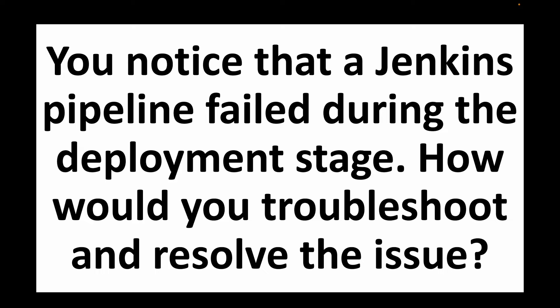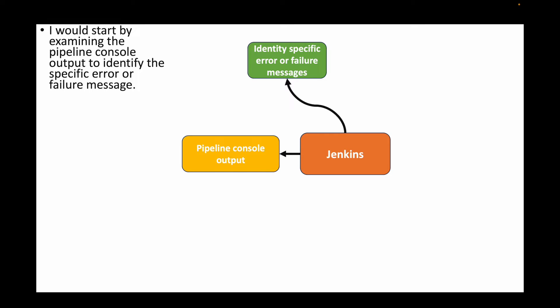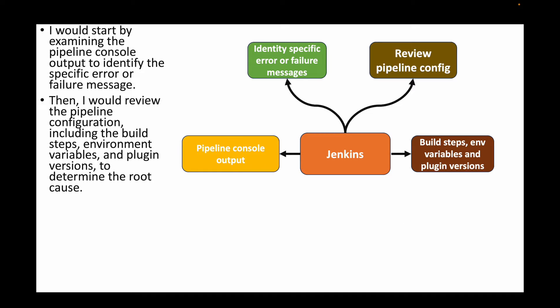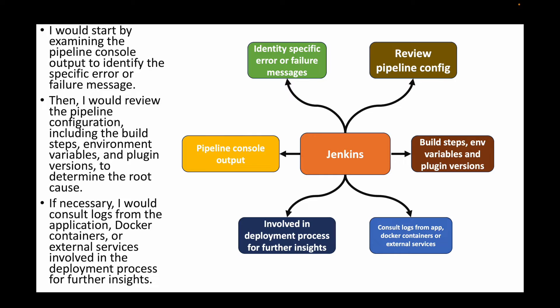The first question: you notice that a Jenkins pipeline failed during the deployment stage — how would you troubleshoot and resolve the issue? We can start by examining the pipeline console output to identify any specific error or failure messages. We can also review the pipeline configuration including build steps, environment variables, and plugin versions to determine the root cause. If necessary, look at logs from your application, Docker containers, or external services involved in the deployment, then fix the issue and rerun the pipeline.